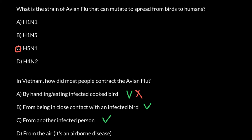A few cases have been registered where the strain H5N1 was transferred from one infected person to another, but this is not an effective way of spreading. Most cases involved spreading from birds to humans. If this virus were able to spread easily from humans to humans, we would face a much more serious situation, because this virus is very deadly — about 50% of the people who contracted it died.